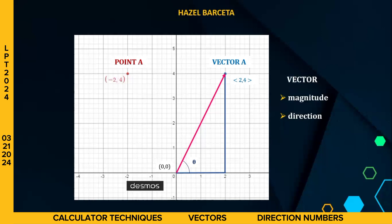So kinakita lang po natin para malaman natin kung alin yung magnitude and yung direction ng vector. So this is just for one axis only. So ayan po. Then, paano po natin masasolve yung magnitude na ito?